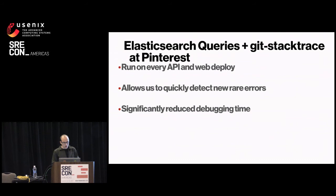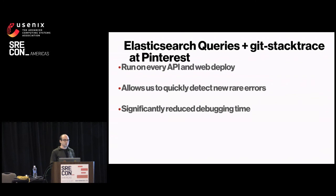The last big benefit is significantly reduced debugging time. Previously when a deploy went wrong, we had to play the guessing game — 80 commits in this deploy, which one caused it? Now we have a quick list of a few commits that probably caused it. You look them up, quickly confirm with the author, and go from there. It's reduced the time to solve these problems from several minutes down to a couple seconds.